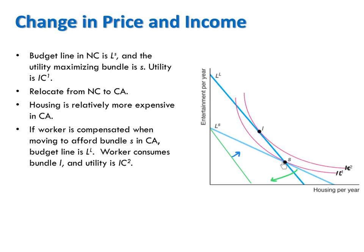However, bundle S, though affordable, is no longer optimal. Bundle S is on the consumer's new budget line, but it's not a point of tangency anymore. At point S, the consumer's indifference curve is flatter than her budget line, so her MRS is smaller than her MRT, meaning she gets a smaller bang per buck from the good on the x-axis (here housing) and a larger bang per buck from the good on the y-axis (here entertainment). She therefore chooses a new bundle moving towards entertainment and away from housing. The consumer could choose S, but she won't because by choosing bundle I on an even higher indifference curve, she's better off.